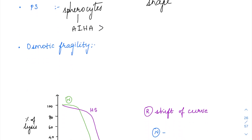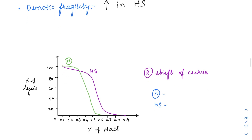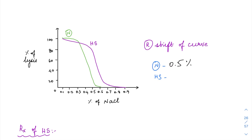Osmotic fragility is a test to assess the fragility of the RBCs in hypotonic saline. Osmotic fragility in HS is elevated — this is a diagnostic test for HS. Normally, if you put an RBC in hypotonic saline it ruptures; normal RBCs rupture at 0.5% hypotonic saline. In HS, rupture occurs at a higher concentration — at 0.7% itself — while normal saline is 0.9%.